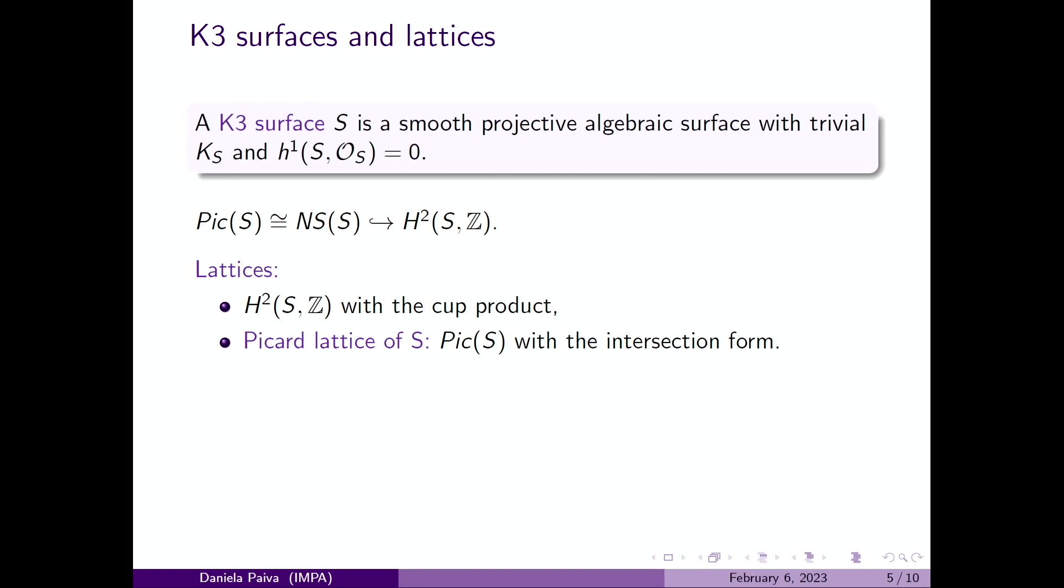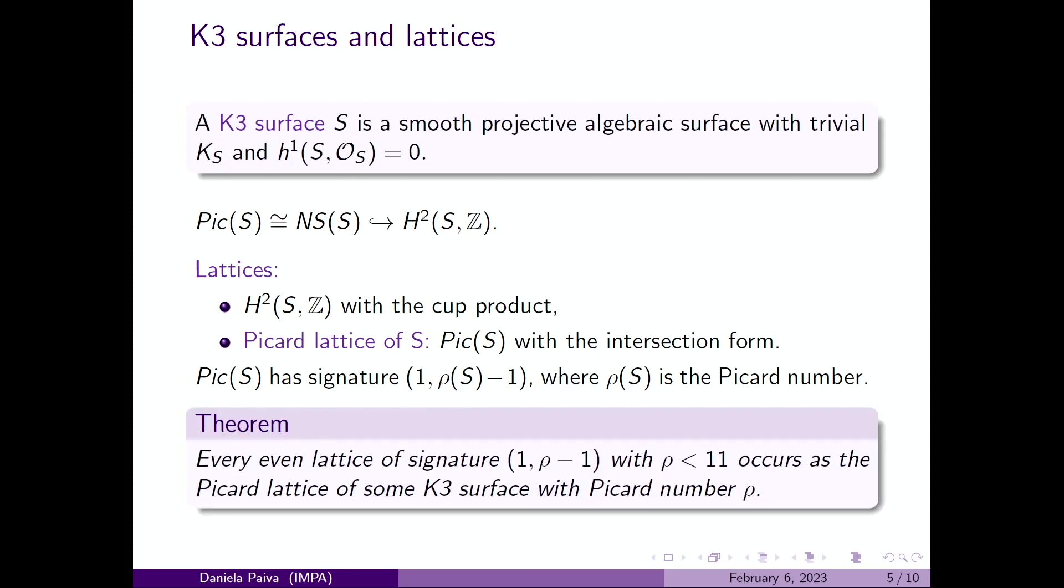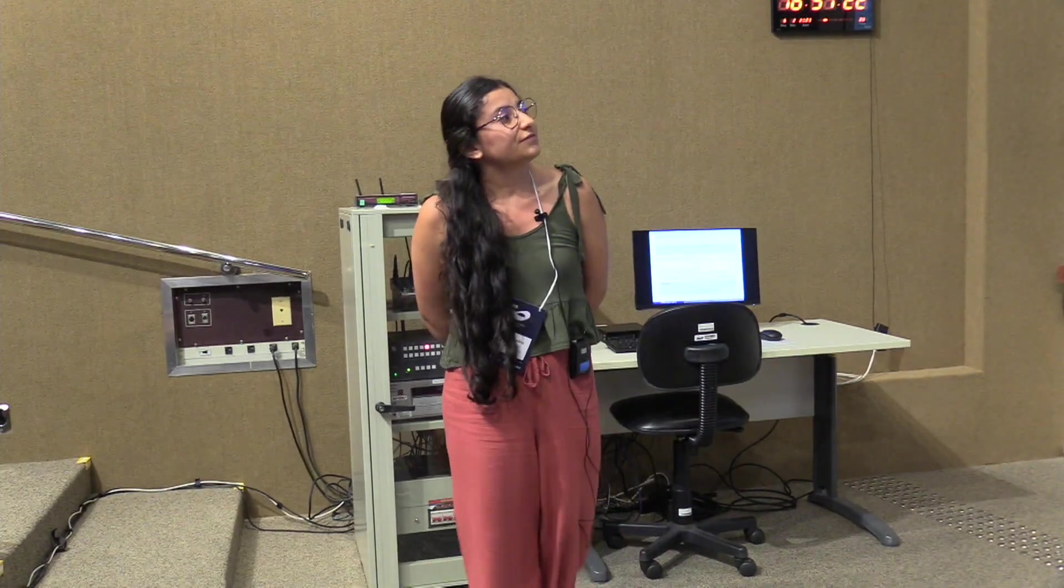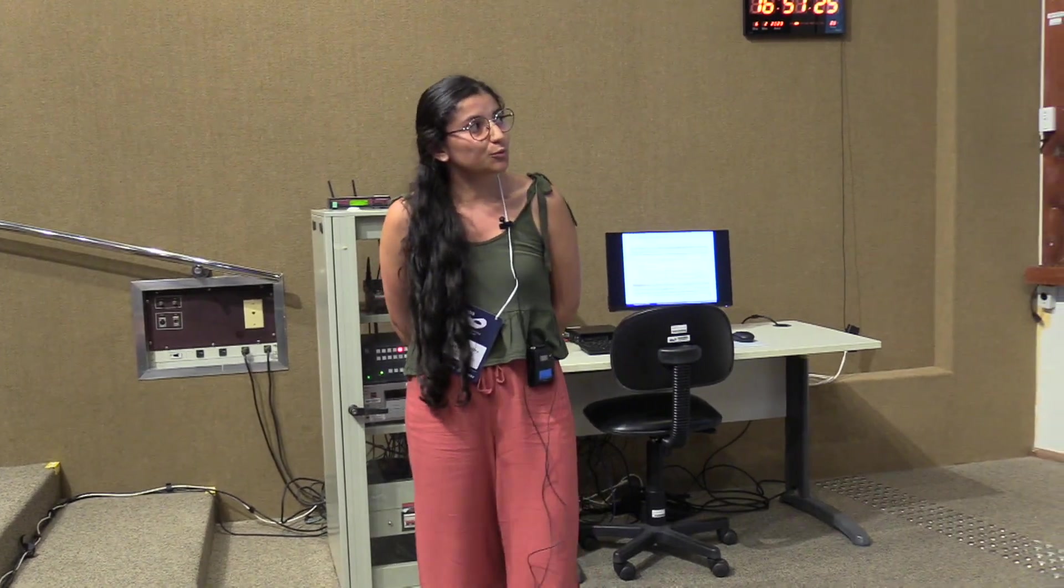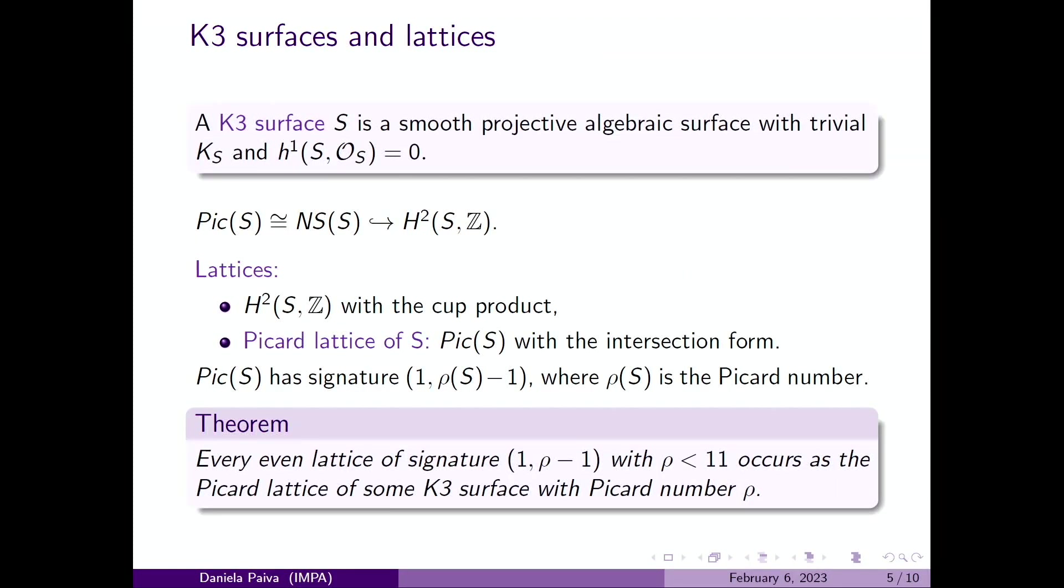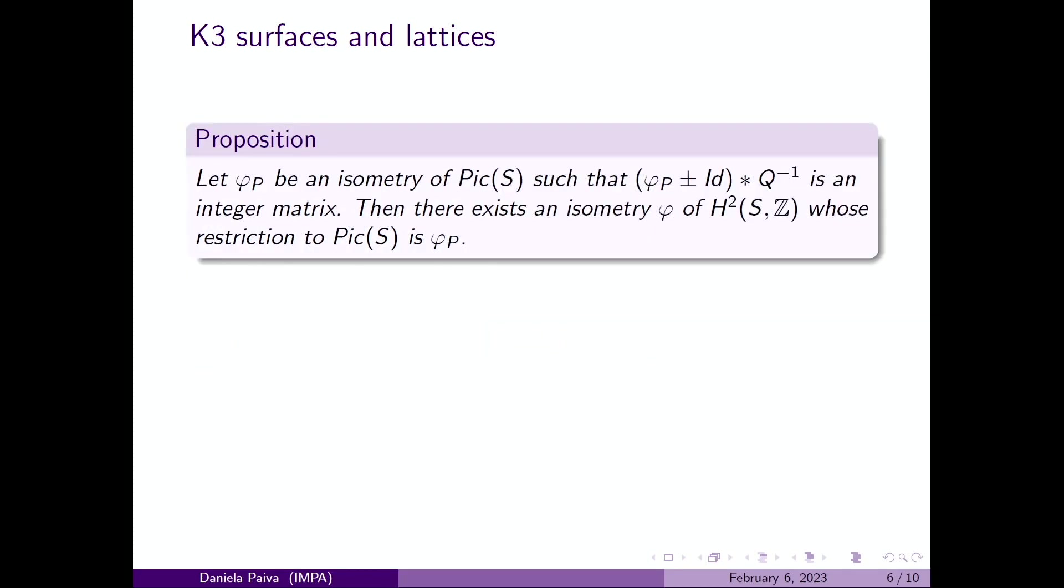They are not just groups, they are lattices, in fact even lattices, where the symmetric bilinear form for H² is given by the cup product, and in the case of the Picard group is given by the intersection form of the surface. This lattice is called the Picard lattice of S, and we can see that this lattice has signature (1, ρ(S)-1), where ρ(S) is the Picard number. So we start with a K3 surface and obtain two lattices. We have this interesting result that says that if we have an even lattice with signature (1, ρ-1) with ρ less than 11, it occurs as the Picard lattice of some K3 surface with Picard number ρ.